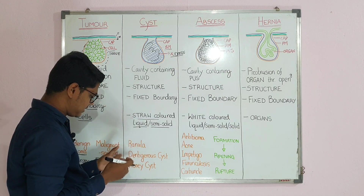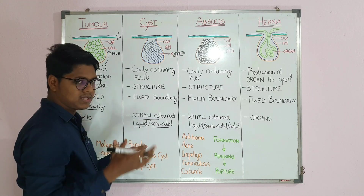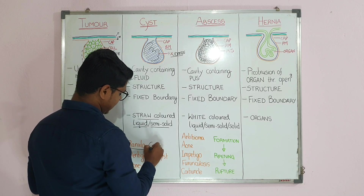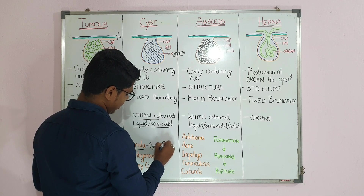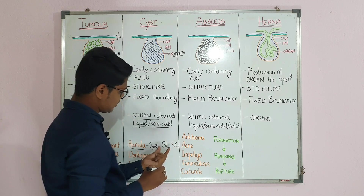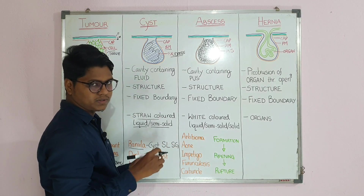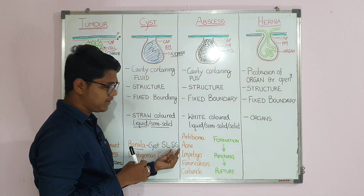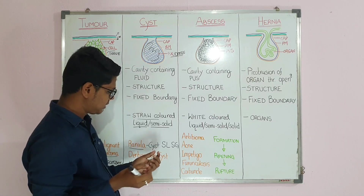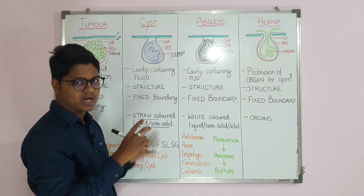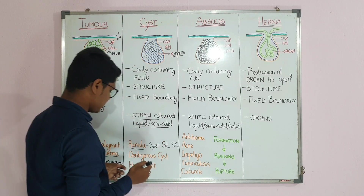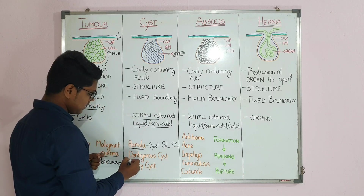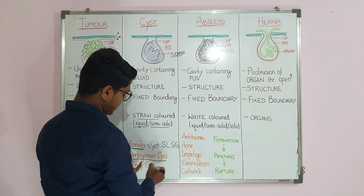For students appearing for viva voce exams, here are some short questions usually asked. Ranula is basically the cyst of the sublingual salivary gland. The sublingual salivary gland opens on the side of the frenum linguae. If there is any blockage to the duct, there will be accumulation of saliva forming a cyst — this is known as ranula, a retention cyst.